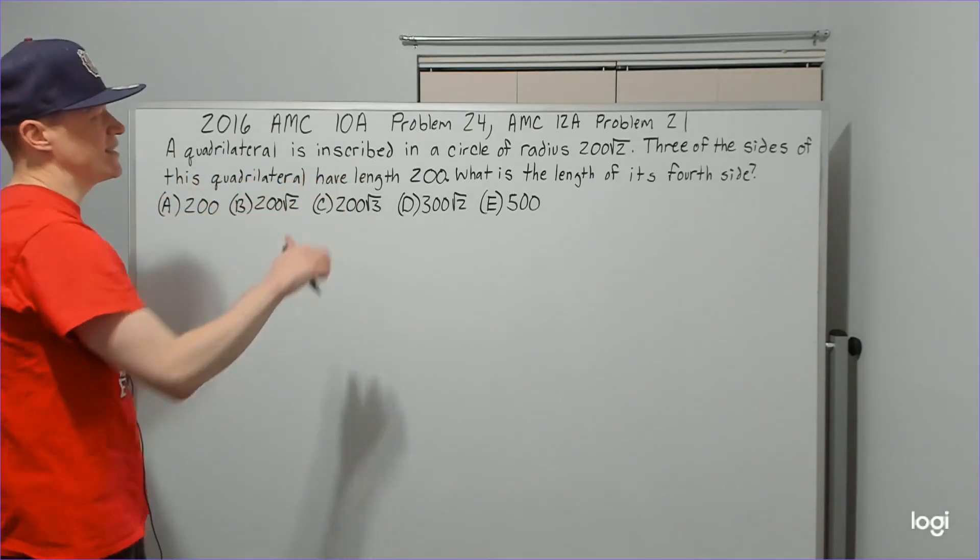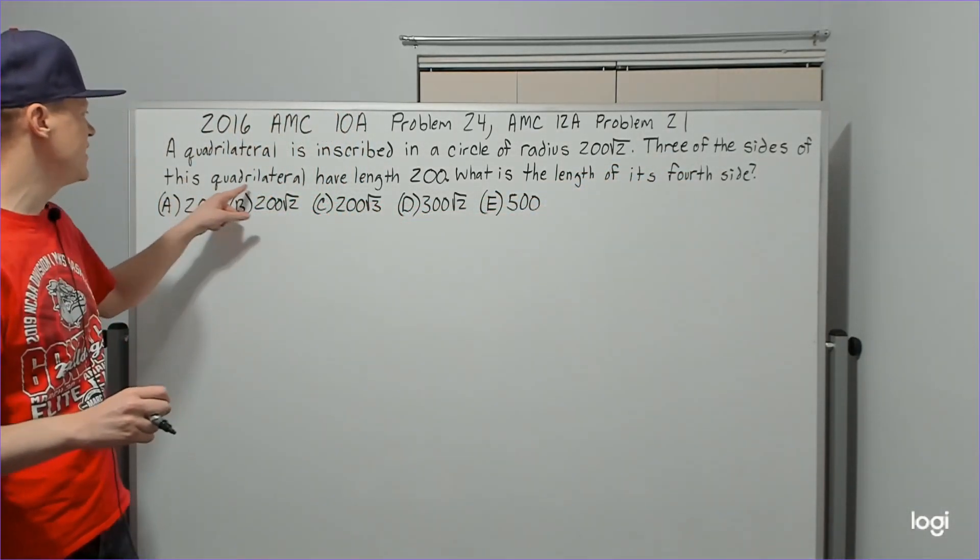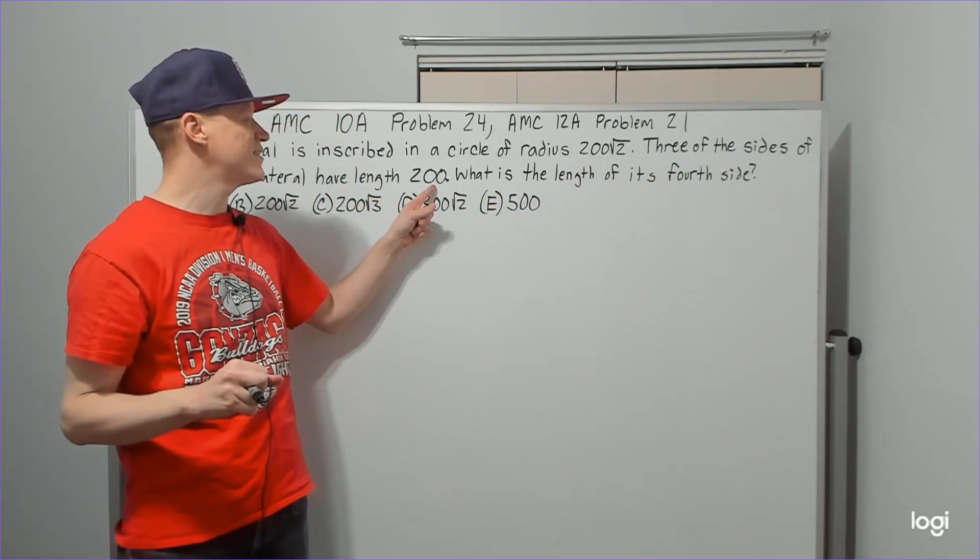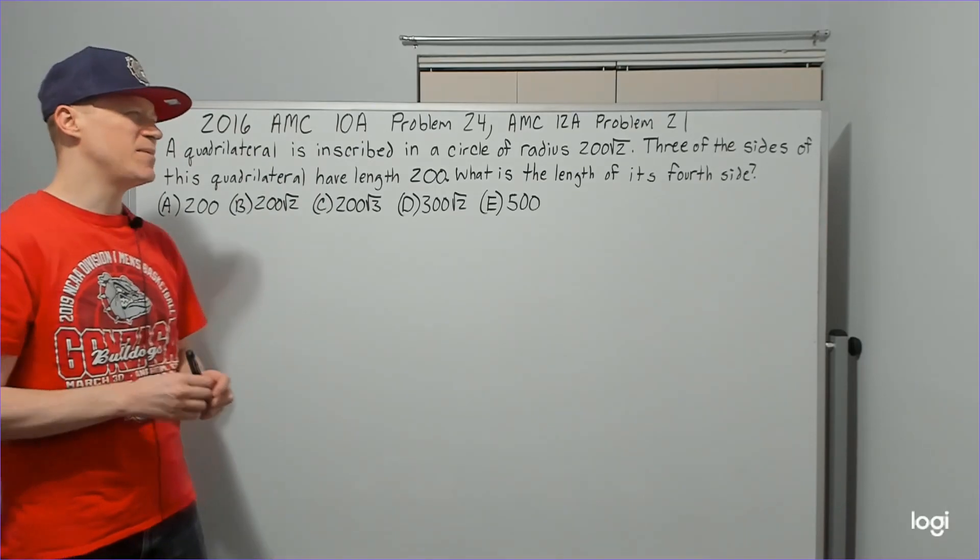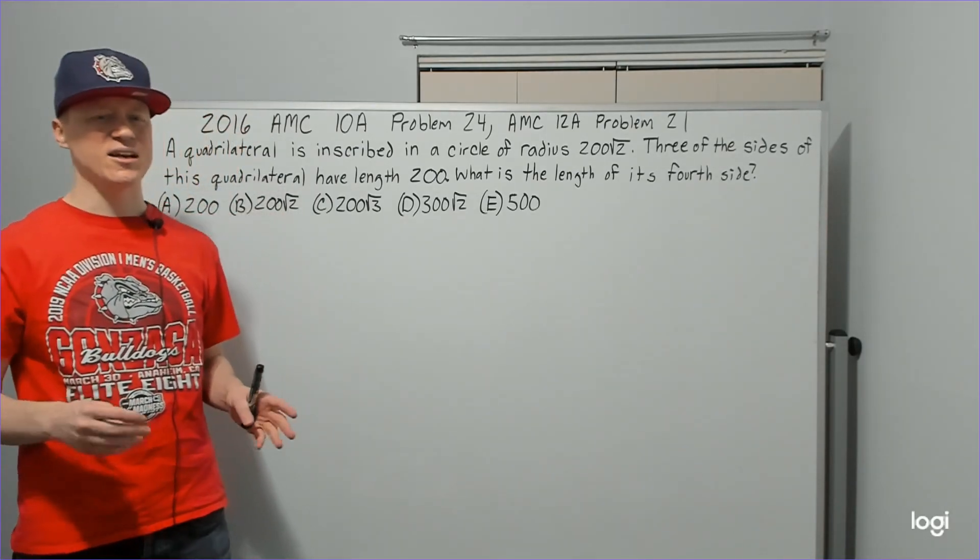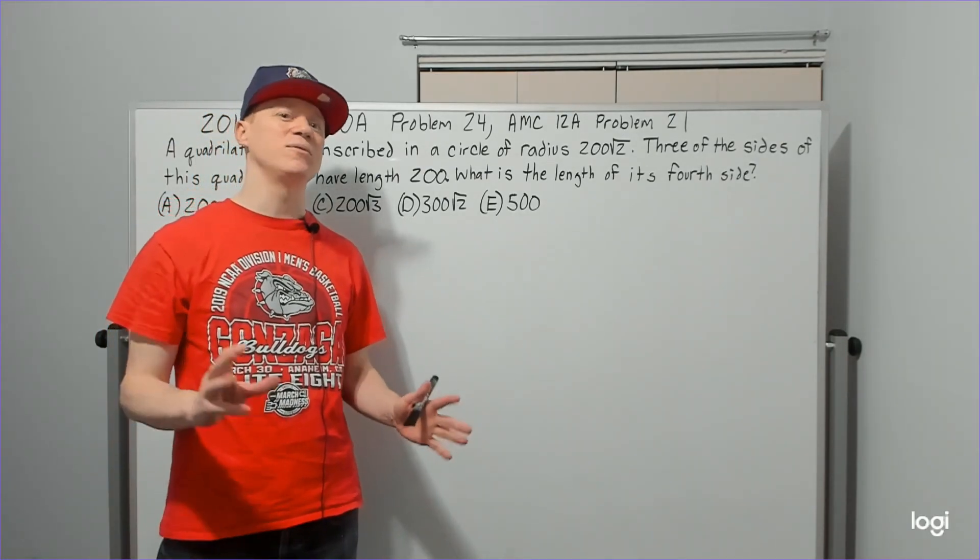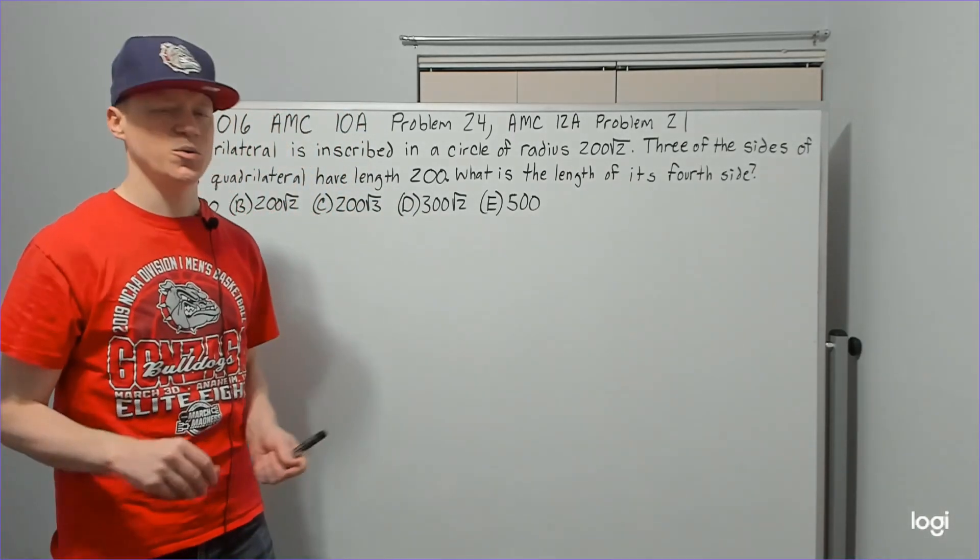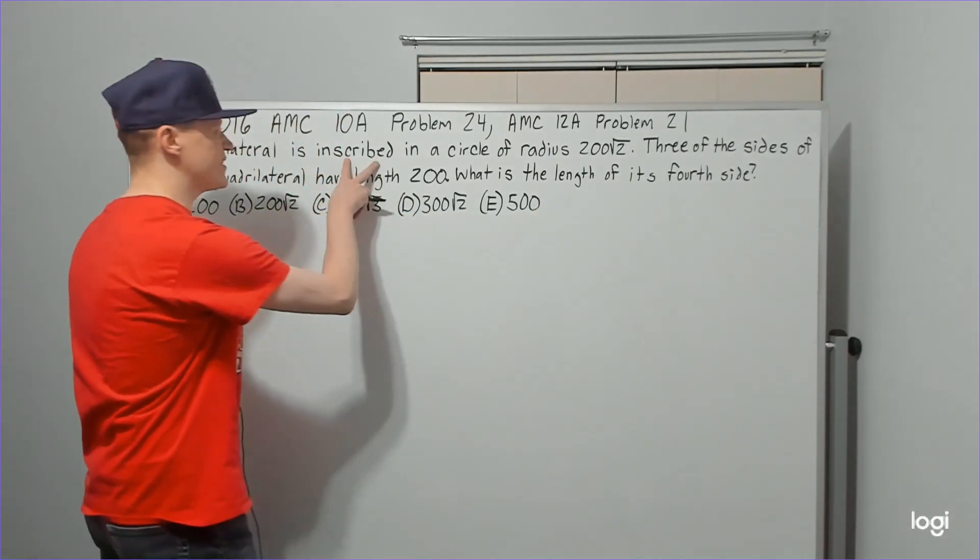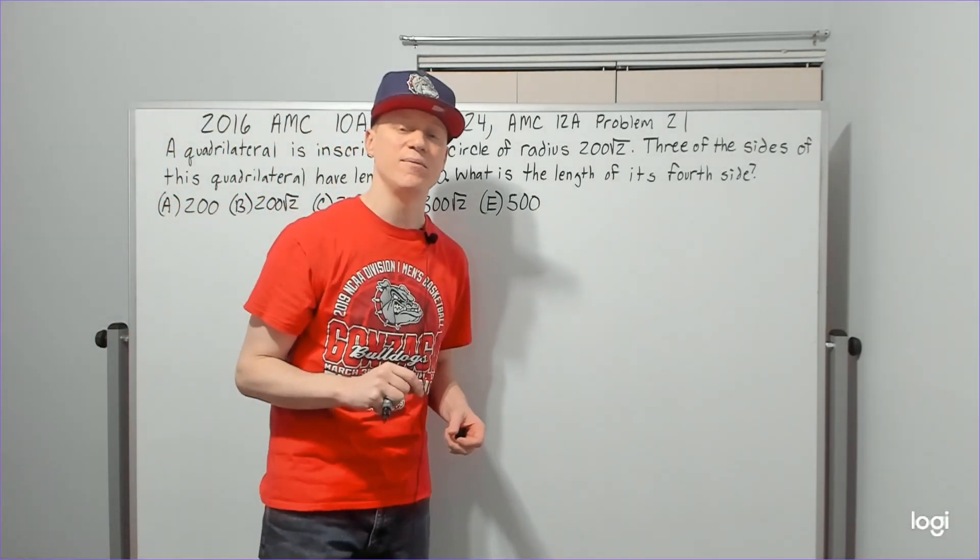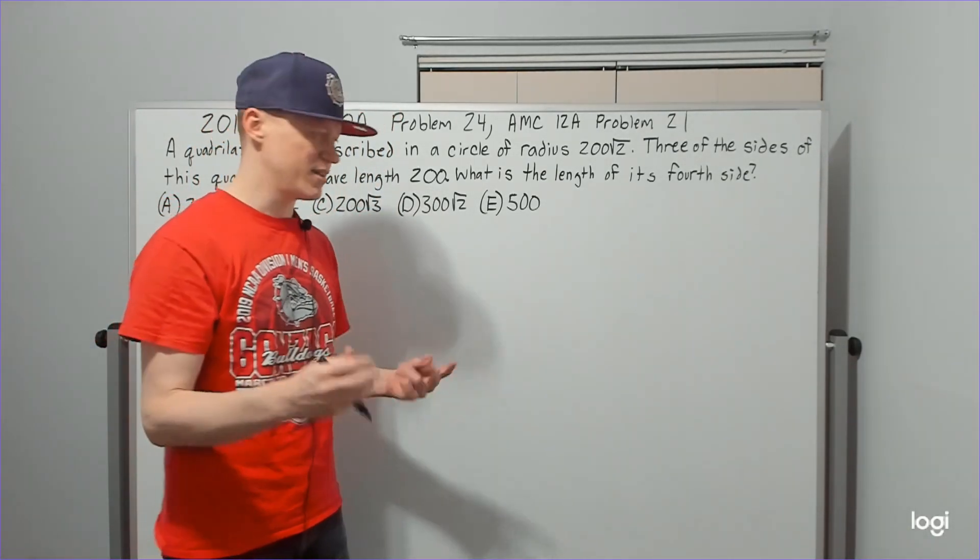A quadrilateral is inscribed in a circle of radius 200 root 2. Three of the sides of this quadrilateral have length 200. What is the length of its fourth side? Okay, so this is the method that I use to solve it. There are about 12 different solutions on the AOPS forums. Feel free to check those out. There might even be superior ones to this one. This is just what I did to solve it, so I'm sharing it with you. First thing is, when it says it's inscribed in a circle, think inscribed quadrilaterals. And my very first thought is, how can I use Ptolemy's theorem? It's one of the things that you can use.